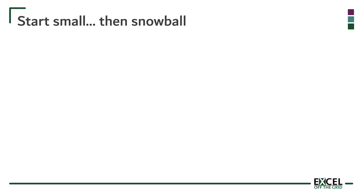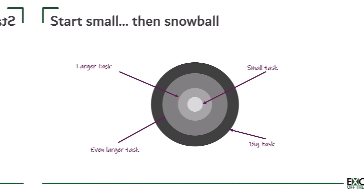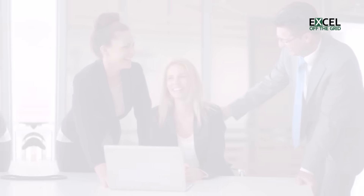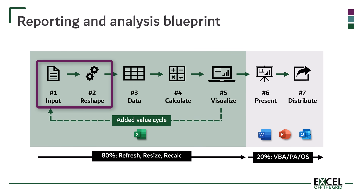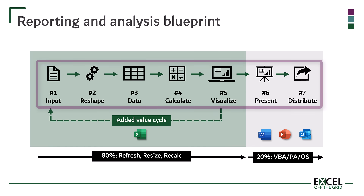Now, initially this may all seem quite daunting — how are you ever going to implement this? The key is to start small, then snowball. Start on a small task, get that task running efficiently, then move on to a slightly bigger task and get that task running efficiently. As your skills increase, you can tackle bigger and bigger tasks. We've seen that we start with input, which we reshape into a data layout. Then we calculate on the data and visualize into a format that we can easily understand. Finally, we present the visualizations in a single package and distribute to the intended audience. And that is the blueprint.